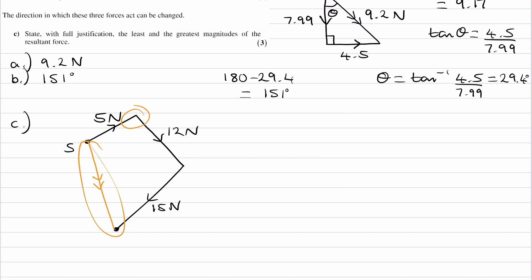So then we want to think about what is the largest that we can have. If we were to rotate these forces, but have them all connected like we see here, how can we make this orange line as big as possible? Well that will simply be when the three vectors, the 5N, the 12N, and the 15N, are connected in a straight line.